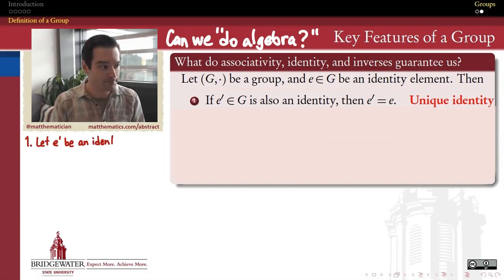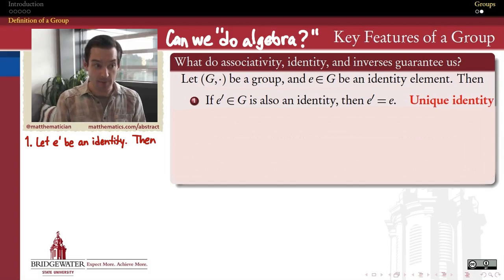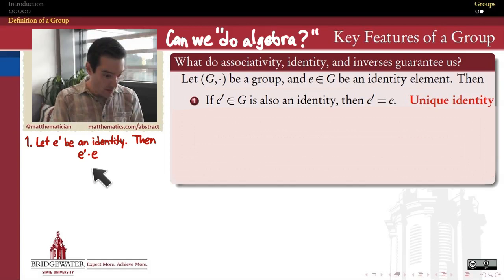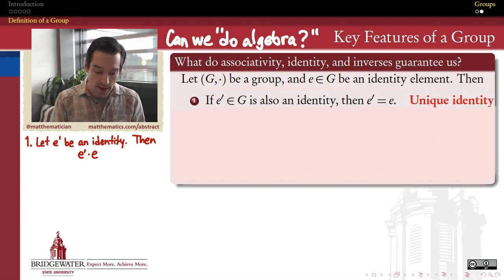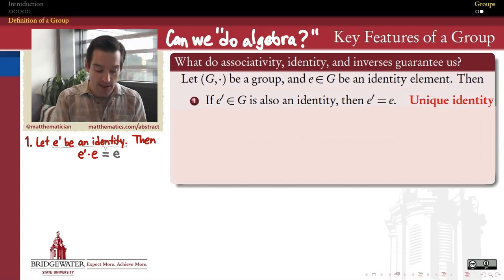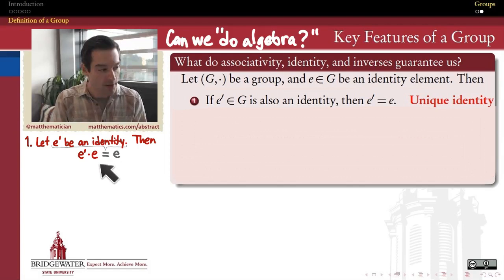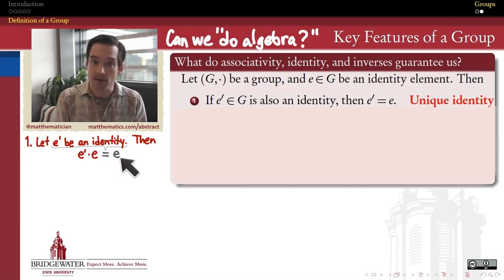How do we prove that? Well, let's suppose that E prime is an identity element for our group, and then let's form the product E prime multiplied by E. What can we say about that? On the one hand, because E prime is an identity element, it doesn't change anything that it multiplies — E prime multiplied by E is going to just be E, because E prime is an identity.